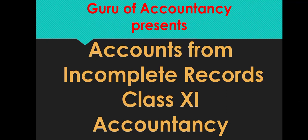Welcome to Accounts from Incomplete Records, Class 11 Accountancy. Today we are going to learn this new chapter. As you all know, in accountancy we give two effects of each and every transaction. That means we follow the double entry bookkeeping system. As per the duality concept, we record every transaction at minimum two places.